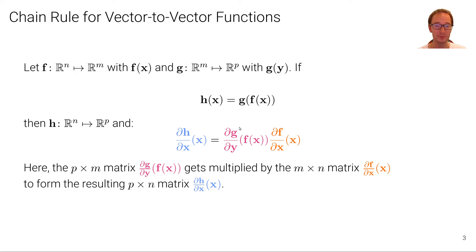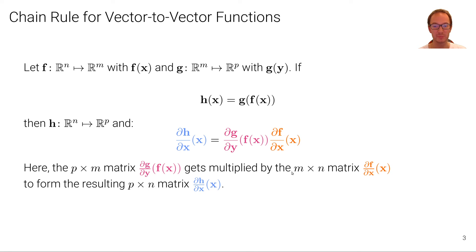The only difference is that now we have matrices instead of scalars. Specifically, the derivative of g with respect to y is a p times m matrix, because g maps from R^m to R^p. This gets multiplied with the m times n matrix for the derivative of f with respect to x, because f maps from R^n to R^m. The result is the p times n matrix for h.